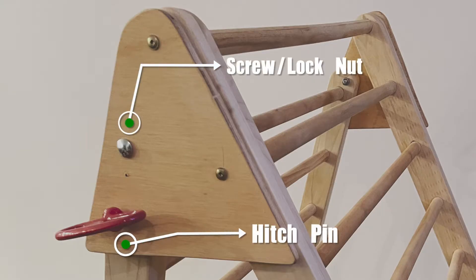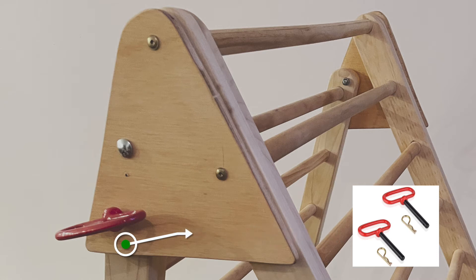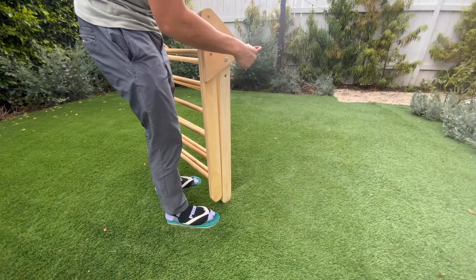We're going to use that ⅜ inch hole to add a screw lock nut combination and then a hitch pin on the bottom hole. The hitch pin makes it easy for me to remove and then easily collapse the Pikler triangle and store away.